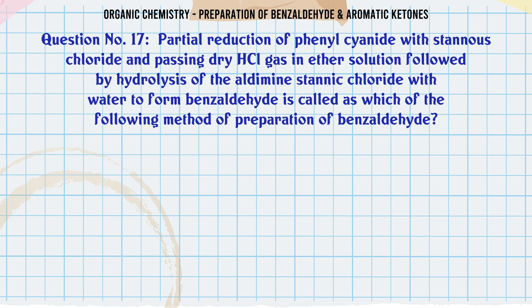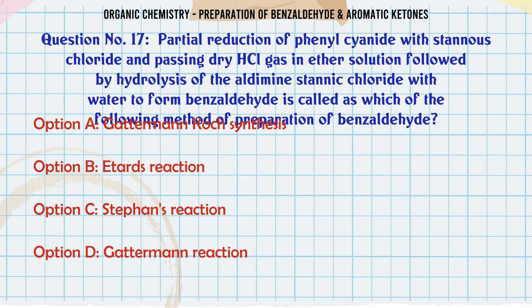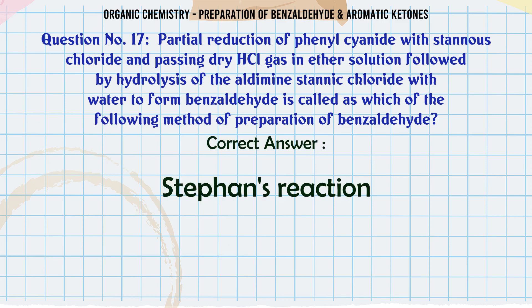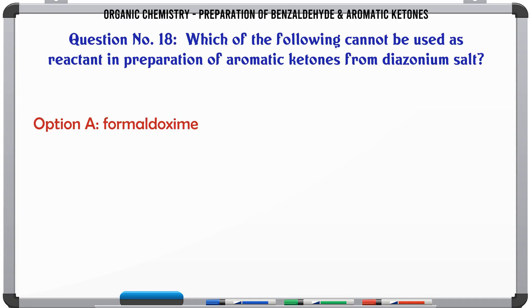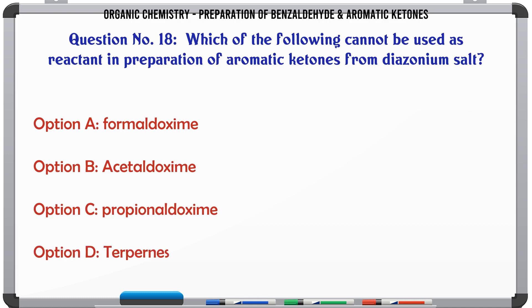Partial reduction of phenyl cyanide with stannous chloride and passing dry HCl gas in ether solution, followed by hydrolysis of the aldamine stannic chloride with water to form benzaldehyde, is called which of the following methods? A. Gattermann-Koch synthesis. B. Etard reaction. C. Stephan's reaction. D. Gattermann reaction. The correct answer is Stephan's reaction.